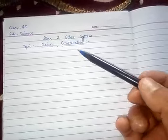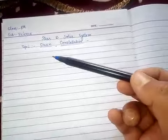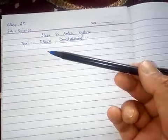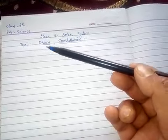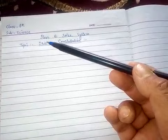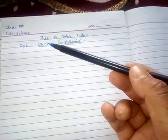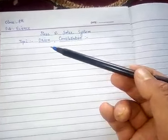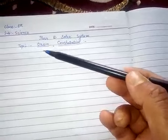Assalamu alaikum. This is stars and solar system, a lesson about constellations. I will discuss a previous lecture where we covered some major constellations, specifically the Orion constellation, which I will recapitulate.